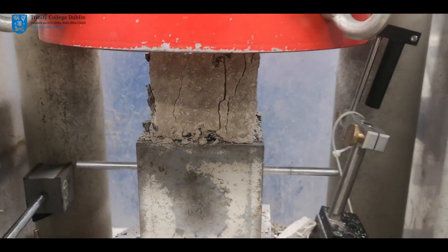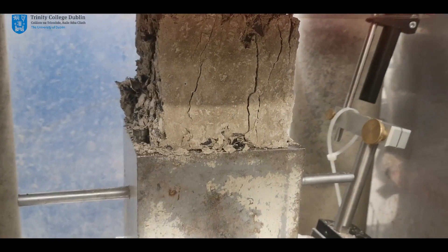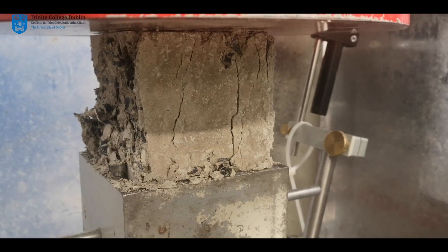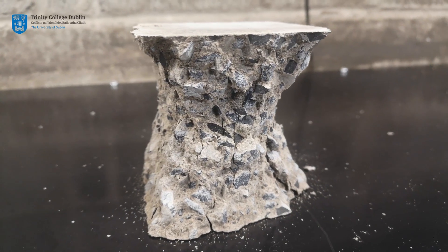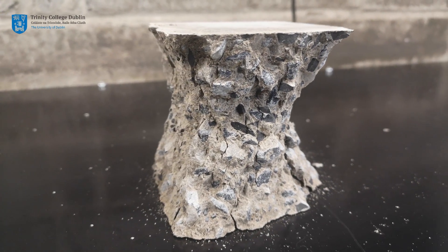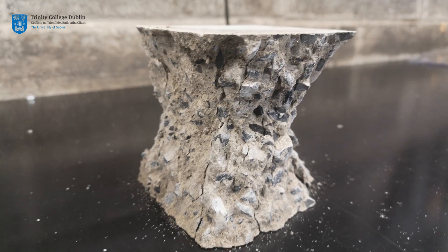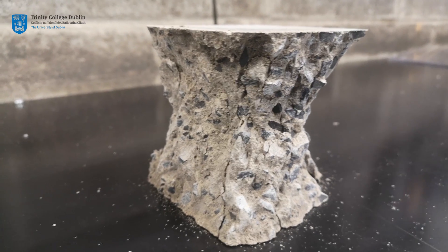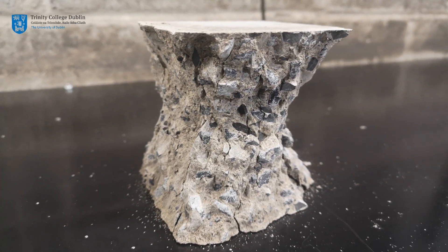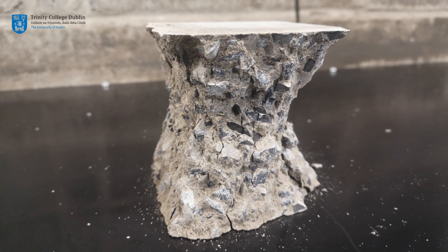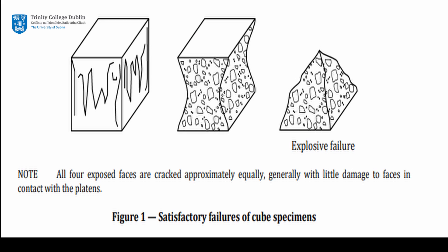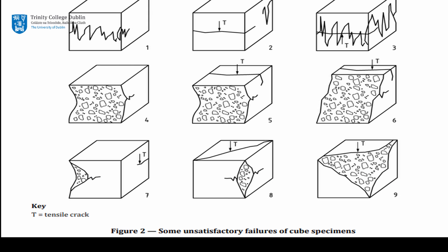The sample should crack and fail uniformly across the four surfaces that are not in contact with the testing platens. Any deviation from this is deemed an unacceptable result according to EN12390 Part 3. The standard provides guidance and graphical illustrations on how cubes should fail during a compression test. Satisfactory and unsatisfactory failure patterns are shown in figures 1 and 2 respectively.